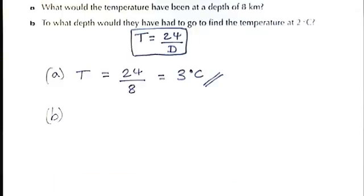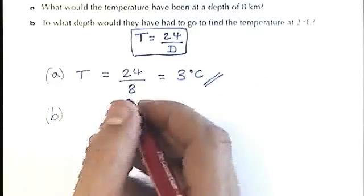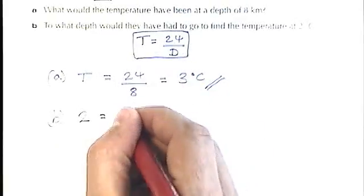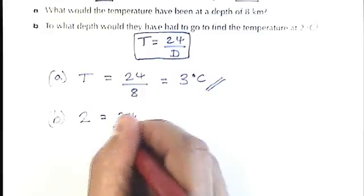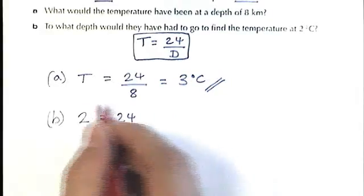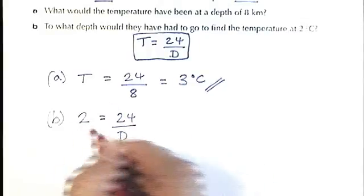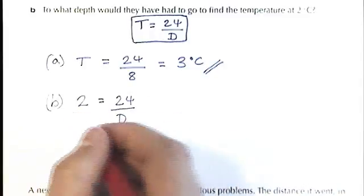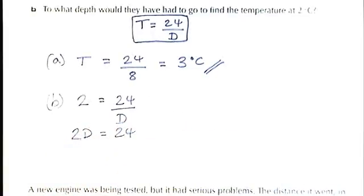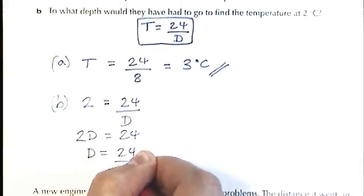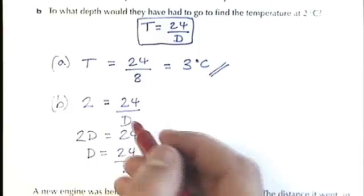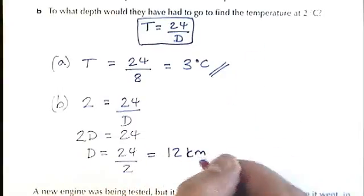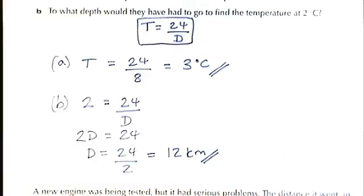For part B, I've got to do what depth would they have to go to find a temperature of 2 degrees. So this time I'm replacing the T in my formula with the 2. The 24 remains the same, that's my constant of proportionality, and the D is what I'm going to try and find. Now when you see something like this, there's a very quick thing you can do, which is to switch over the 2 and the D. But I'm just going to show you why algebraically that works. What you need to do is multiply both sides of this equation now by D, and then divide both sides of the equation by 2. And you can see the effect there is that the D and the 2 have swapped places. They were like this, and now they've swapped places here. That's 12, and just have a look in the question. Distance or depth is measured in kilometers.